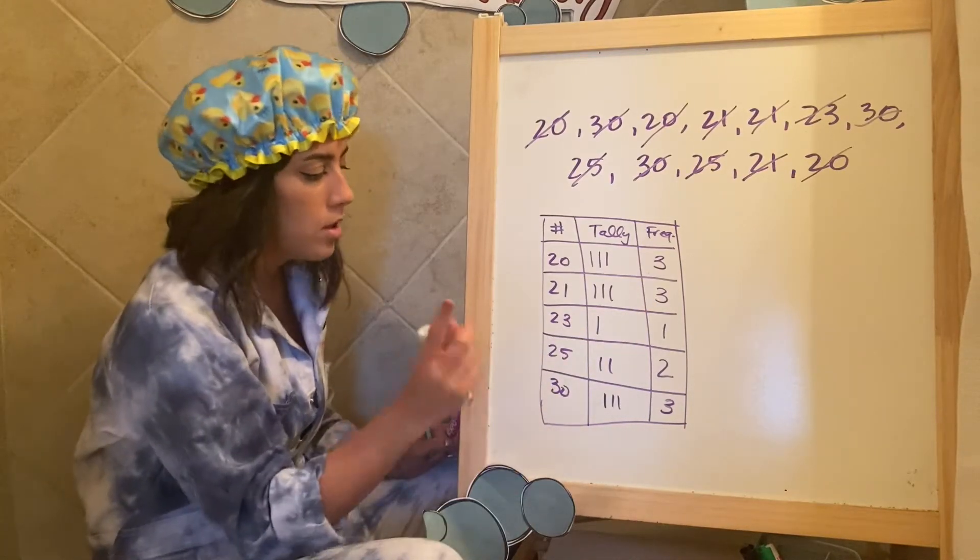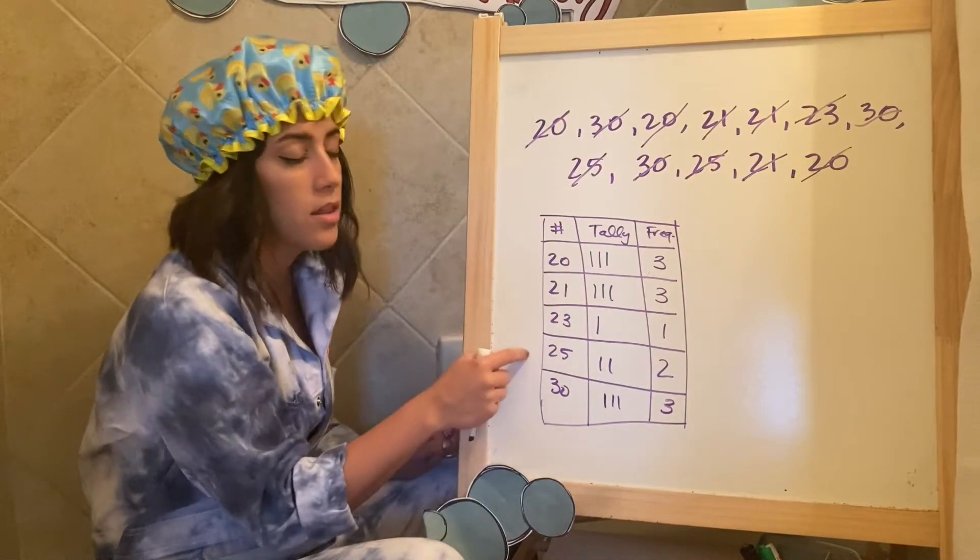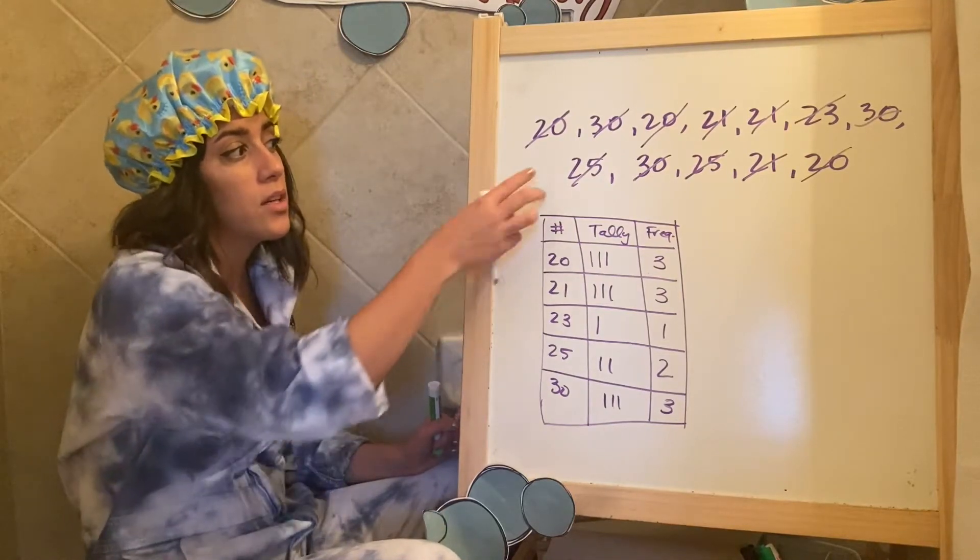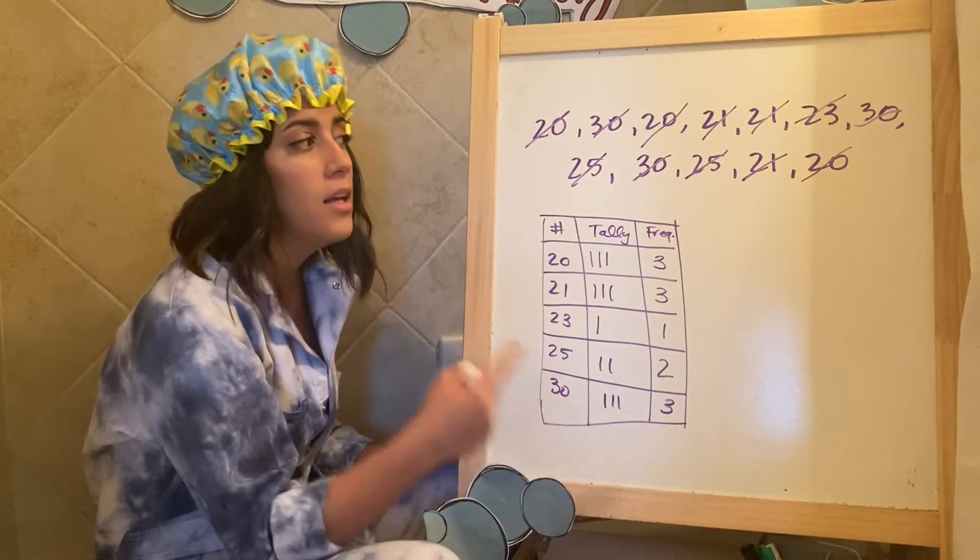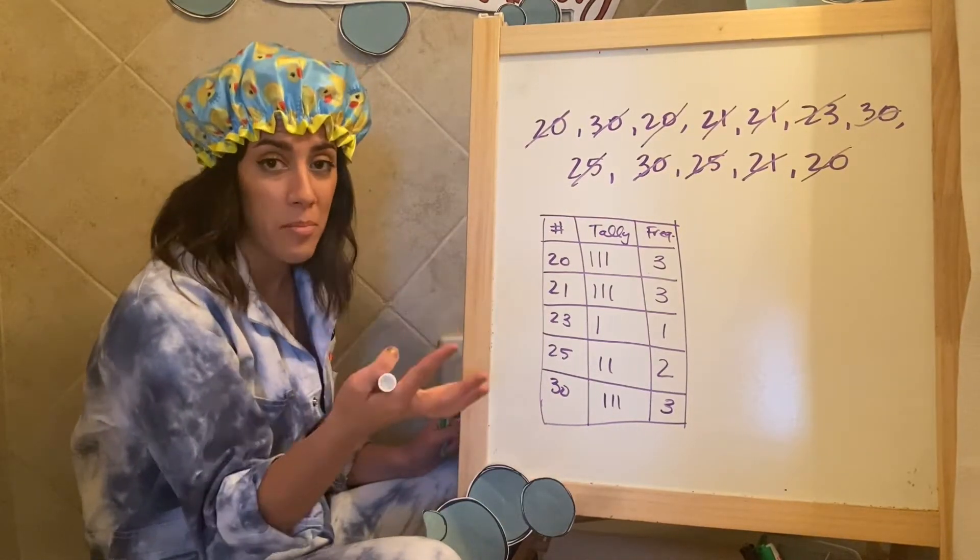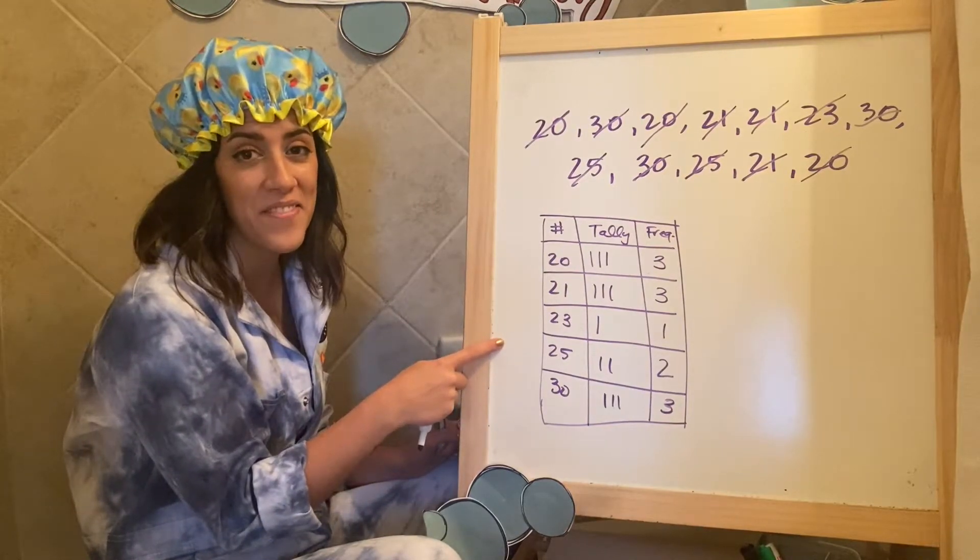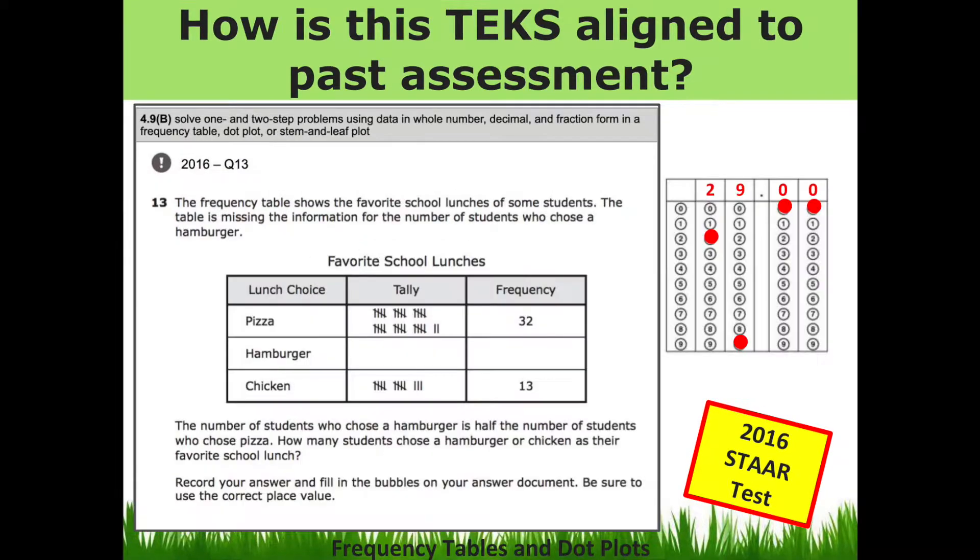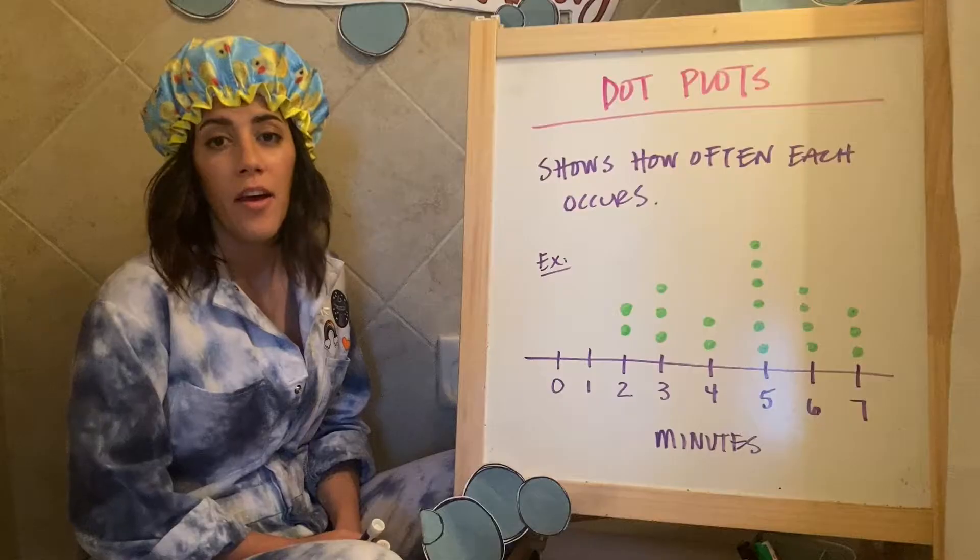So how many 21s were there? Three. How many more, you know, 21 or 20, 21, and 30 altogether were there than the 25s? So you can kind of go based off there. The interesting thing though, is that you can also do the same thing with this data, not create a frequency table and make a dot plot. Let me show you what dot plots are, and then we'll come back to this example and show you how you can do the exact same thing.